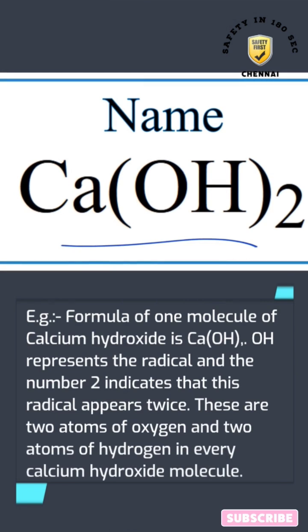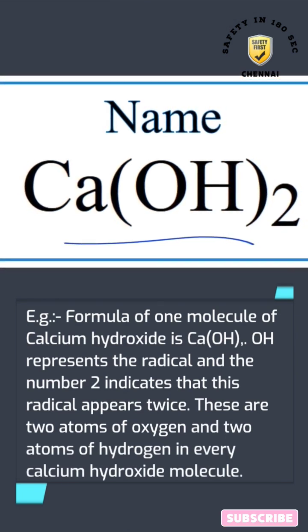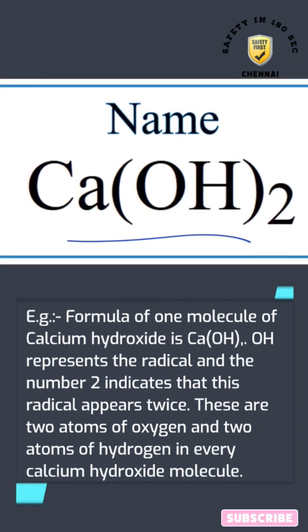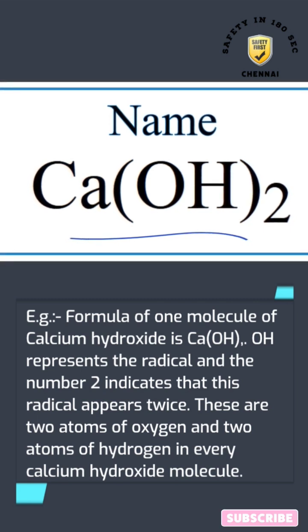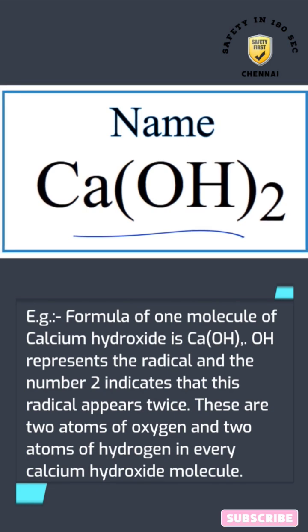For example, the formula of one molecule of calcium hydroxide is Ca(OH)2. OH represents the radical and the number 2 indicates that this radical appears twice. There are two atoms of oxygen and two atoms of hydrogen in every calcium hydroxide molecule.